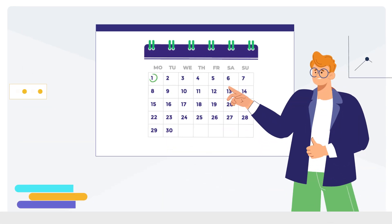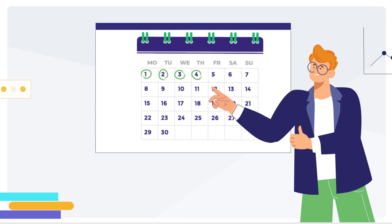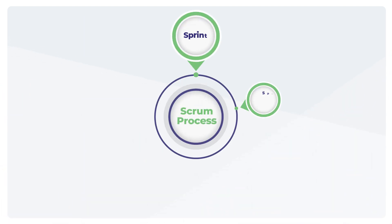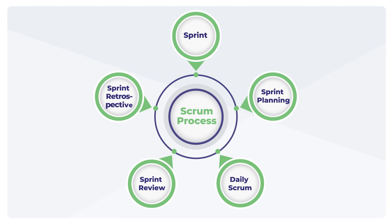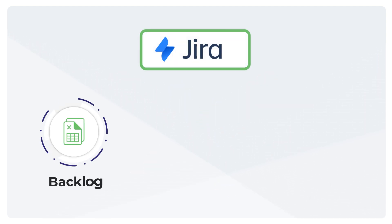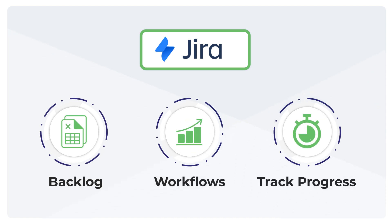Sprints are a set amount of work to be completed in a time-boxed period, usually one to four weeks. Sprints are central to the scrum process, allowing teams to make regular progress and adapt quickly. In JIRA, sprints help you visualize your backlog, move tasks through workflows, and track progress in real time.